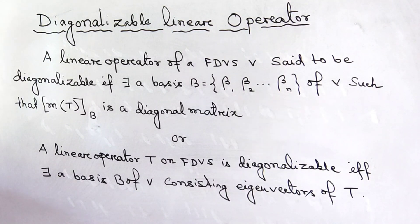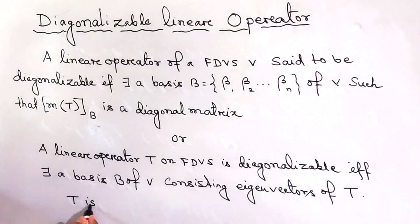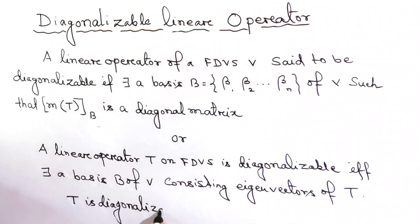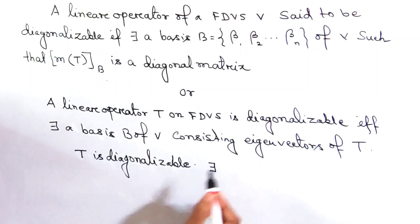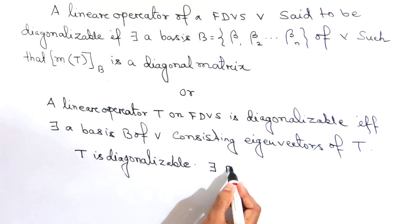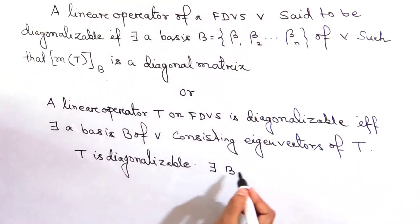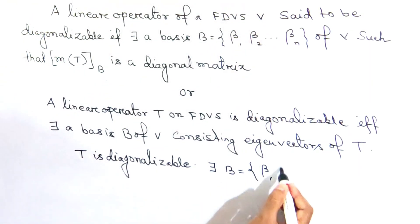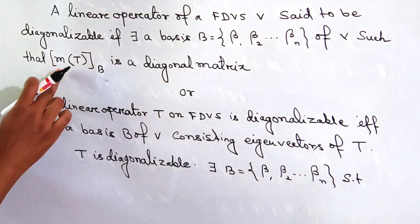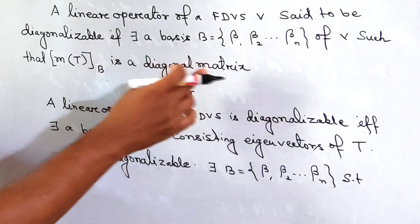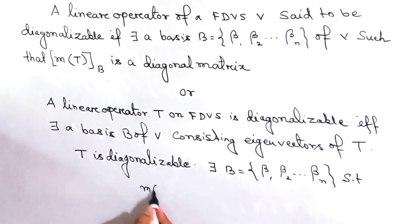At first, we let T is diagonalizable. So there must exist a basis B consisting of β1, β2, ..., βn, such that the matrix of T with respect to β is a diagonal matrix. Let it be N of T.